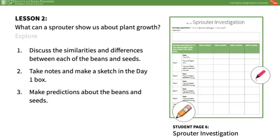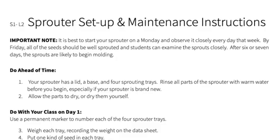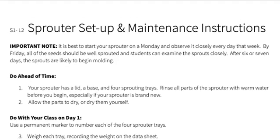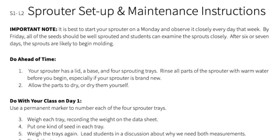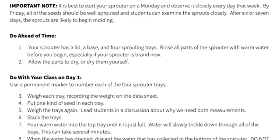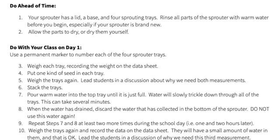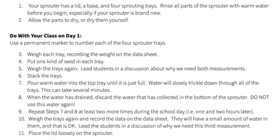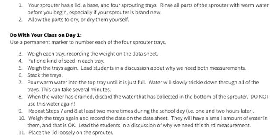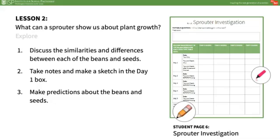In the explore portion of this lesson, the seed sprouter will be set up after students make predictions about how the seeds will grow. Refer to teacher page 4 for setup directions before you intend to start this lesson. On the day of this lesson, put students into six groups and give each group a sample of each kind of bean or seed. MySci provides four types: mung beans, lentils, alfalfa, and garbanzo beans. Each group should discuss similarities and differences between the beans and seeds in their small group before sharing out.